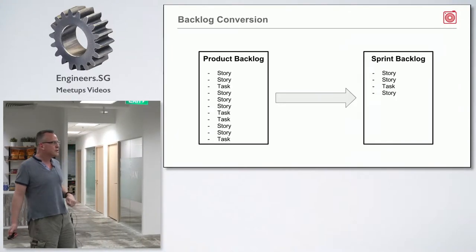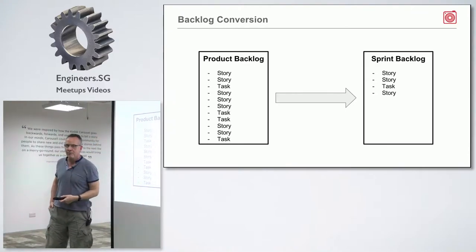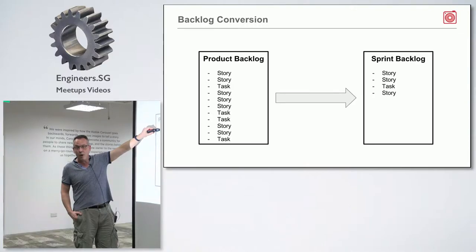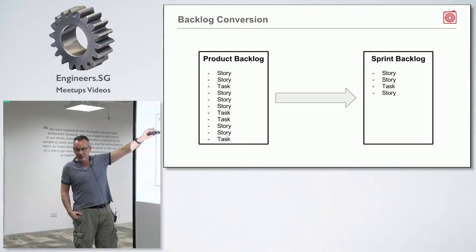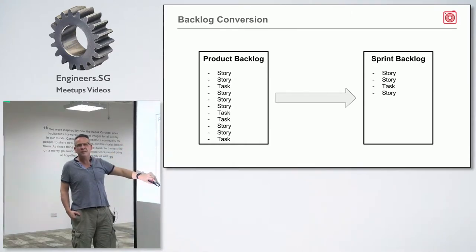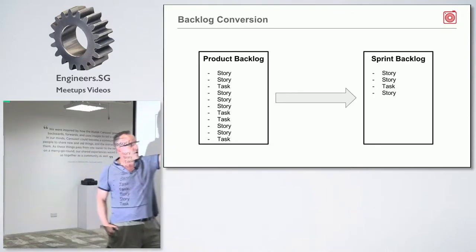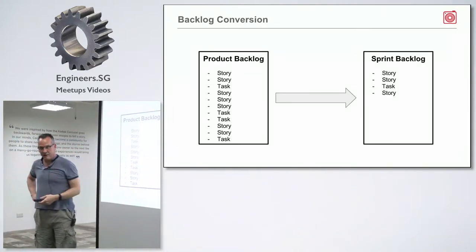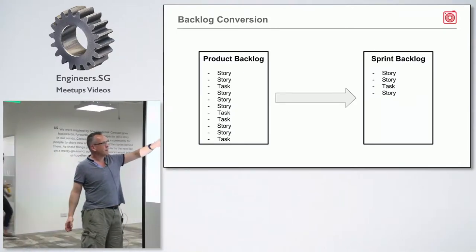The first step in sprint planning is backlog conversion. Good product owners maintain a product backlog ordered from most important to least important, and from highly defined to barely a gleam in the eye. What happens is you take the tip of this list and move it into a sprint backlog. That is the essence of sprint planning — taking the top of the product backlog and converting it into a sprint backlog.